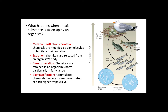Lastly, there is biological magnification or biomagnification. This is similar to bioaccumulation, but chemicals get more concentrated as they move up the food chain. Logically, organisms at the highest trophic levels are at higher risk, as they end up consuming all the chemicals that were accumulated in lower trophic levels.